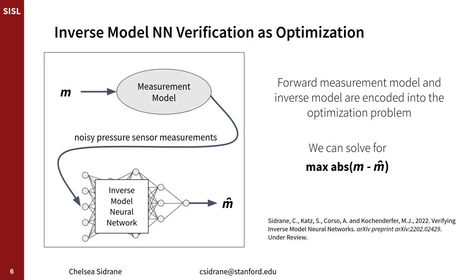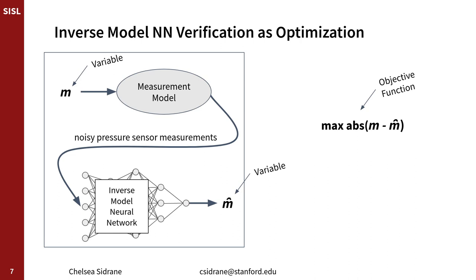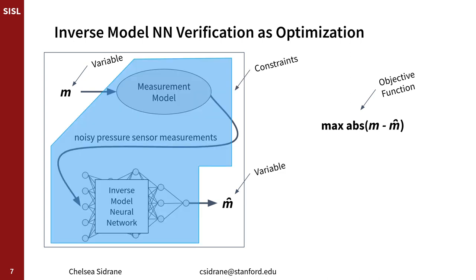Our solution is to use optimization-based neural network verification. The forward measurement model and the inverse model are encoded into an optimization problem. We can then solve for the error between the true fuel mass and the estimated fuel mass. The fuel mass and estimated fuel mass are variables. Our objective is the difference between these two values, and we'd like to maximize it to get the maximum error. The measurement model and inverse model neural network are represented as constraints, connecting the true mass and estimated mass.